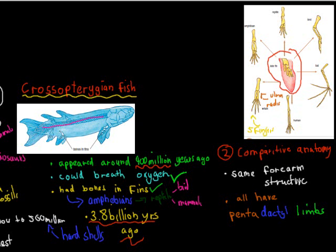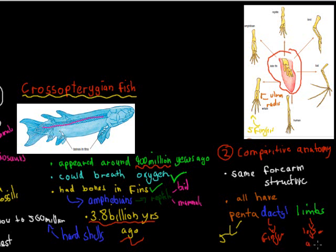You should remember the term pentadactyl limbs. Penta means five, dactyl means fingers or toes, and limbs refers to either legs or arms. All the classes I mentioned — reptiles, mammals, birds, amphibians — they all have five fingers on both their arms and legs. Even the horse, which you might think has only one, still has five. This is another evidence that we are all very similar, which hints at a shared ancestry.